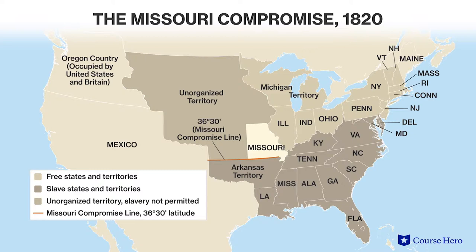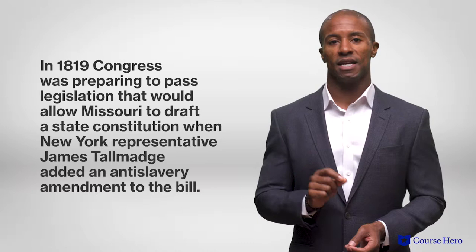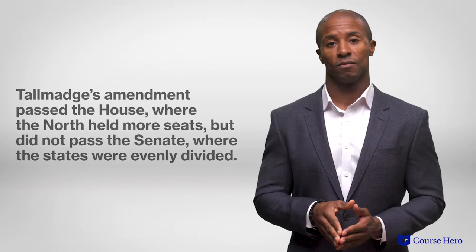Missouri had applied for statehood in 1817, and in 1819, Congress was prepared to pass legislation allowing Missouri to draft a state constitution when New York Representative James Talmadge added an anti-slavery amendment to the bill. Talmadge's amendment passed the House, where the North held more seats, but did not pass the Senate, where the states were evenly divided.